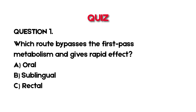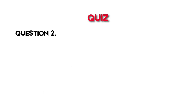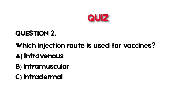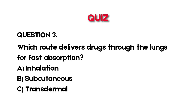Before we wrap up, let's test your knowledge with a quick quiz. Question 1: Which route bypasses first-pass metabolism and gives a rapid effect? A. Oral, B. Sublingual, C. Rectal. Question 2: Which injection route is used for vaccines? A. Intravenous, B. Intramuscular, C. Intradermal. Question 3: Which route delivers drugs through the lungs for fast absorption? A. Inhalation, B. Subcutaneous, C. Transdermal. Drop your answers in the comments.